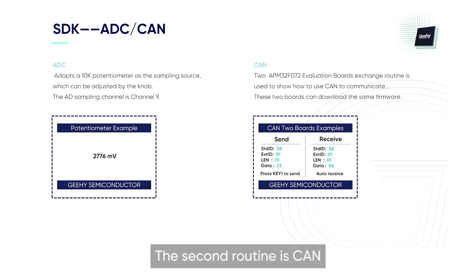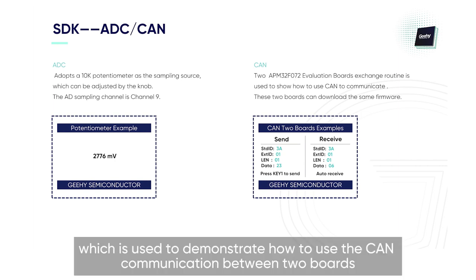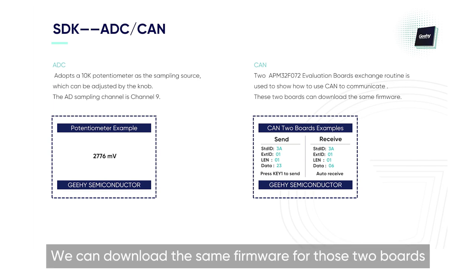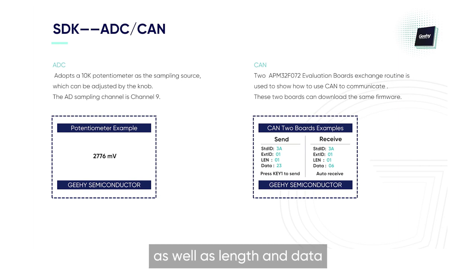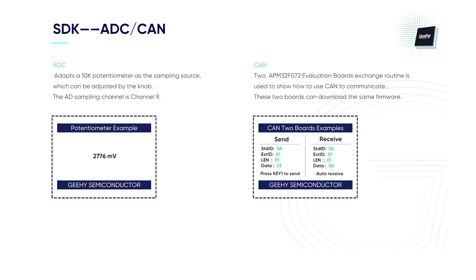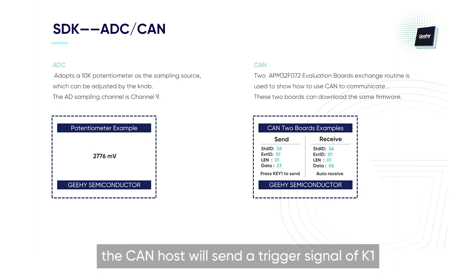The second routine is CAN. The CAN here is a dual-computer communication, which is used to demonstrate how to use CAN communication between two boards. We can download the same firmware for both boards. On the send side, there is STDID and EXTID, as well as length and data. On the receive side, it can receive signals. Whenever we press K1, the CAN host will send a trigger signal of K1.